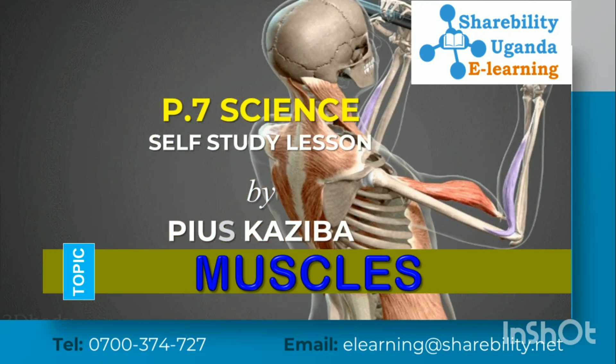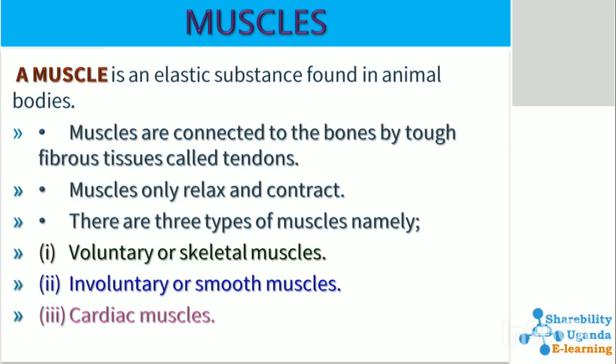Let us define what muscles are, what they do, and how they help shape our body. A muscle is an elastic substance found in an animal body. Muscles are connected to the bones by tough fibrous tissues called tendons. Muscles only relax and contract.